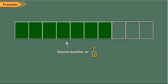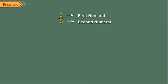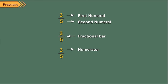So children, we observe that a fraction is a number that names one or more equal parts of a whole or a region. We can also observe that a fraction has two numerals, both separated by a small horizontal line called the fractional bar. The numeral above the bar is called the numerator, and the numeral below the bar is called the denominator. The denominator tells us into how many equal parts a whole has been divided. The numerator tells us how many equal parts of the whole are shaded or taken into consideration.